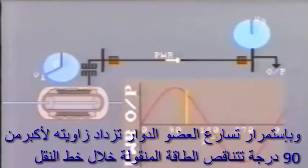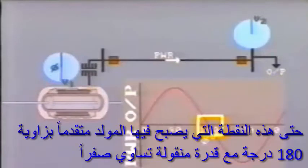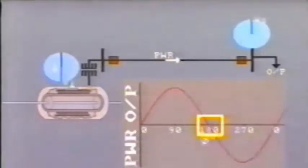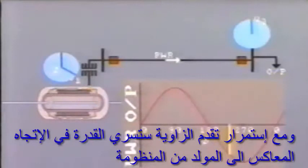As the rotor continues to advance beyond 90 degrees, the amount of power being transferred along the line decreases until at this point the rotor is leading by 180 degrees and there is zero power transfer. As the advance continues, power begins to flow in the other direction — that is, into the generator from the system.